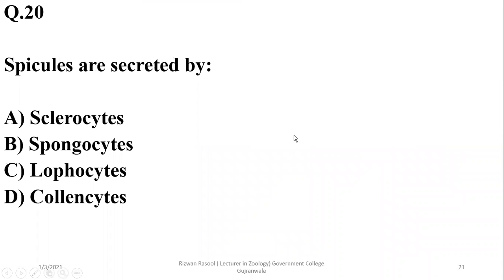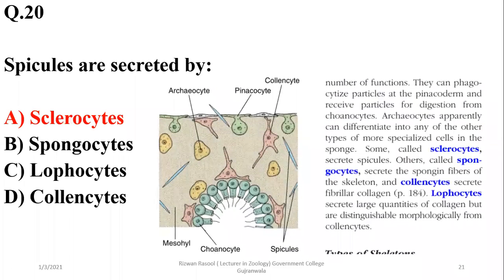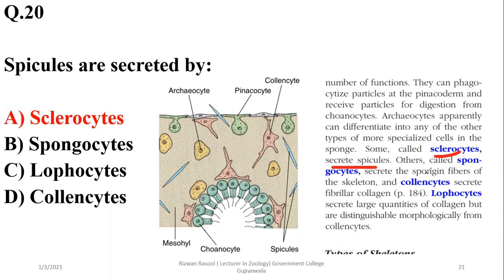Spicules are secreted by specialized cells known as sclerocytes. As you can see, there are different types of cells in the mesohyl. Sclerocytes secrete spicules, spongocytes secrete spongin fibers, collencytes secrete fibrillin collagen, and lophocytes secrete large quantities of collagen but are distinguishable morphologically from collencytes. The right option is alpha.